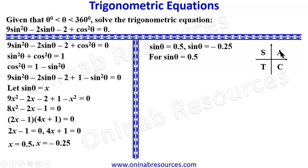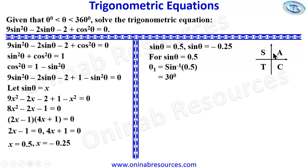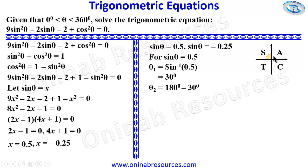For sinθ = 0.5, since this is positive, we focus on the first and second quadrants. In the first quadrant, θ₁ = sin⁻¹(0.5) = 30°. For the second quadrant, since sine is also positive there, θ₂ = 180° - 30° = 150°. Those are all the values of θ for which sinθ = 0.5.